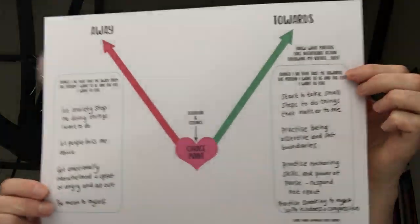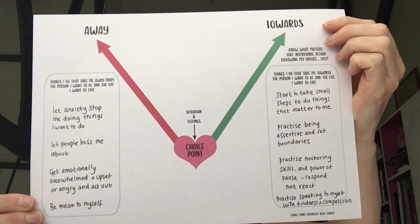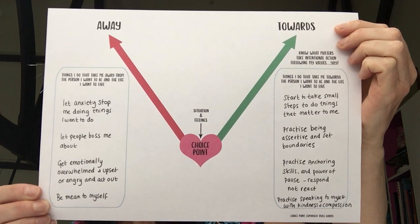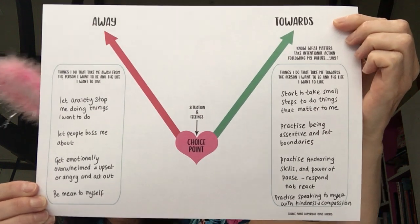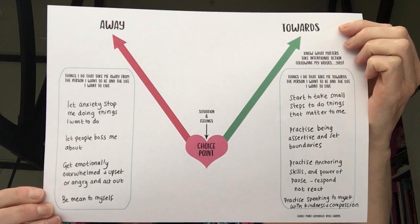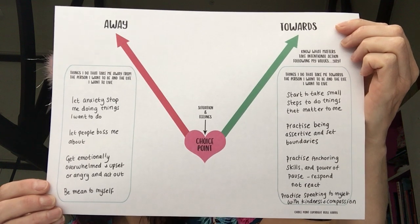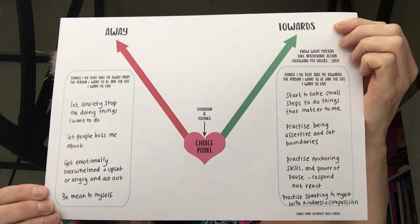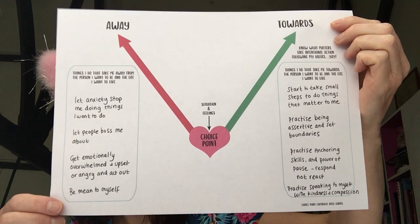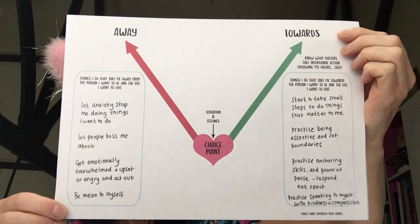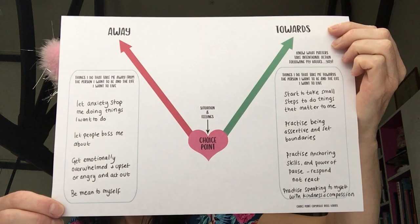For a more anxious style, away moves might be letting anxiety stop you doing things you want, letting people boss you around, getting emotionally overwhelmed and acting out then regretting it, or being mean and critical to yourself. Towards moves might be taking small steps to do things that matter to you, practicing being assertive, setting boundaries and learning to say no, practicing those anchoring skills, learning the power of pause — to respond rather than react — and speaking to yourself with kindness and compassion.